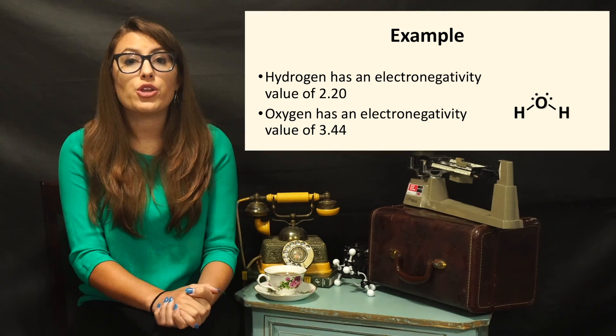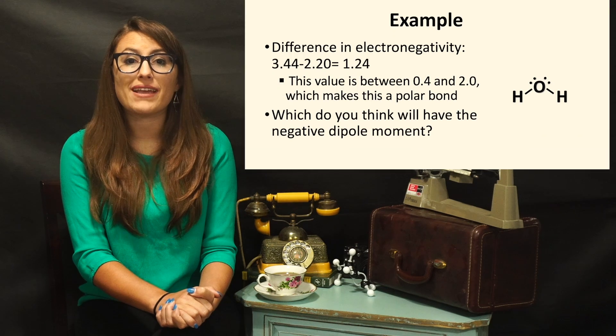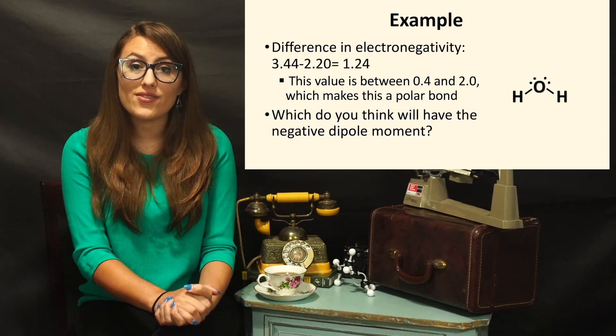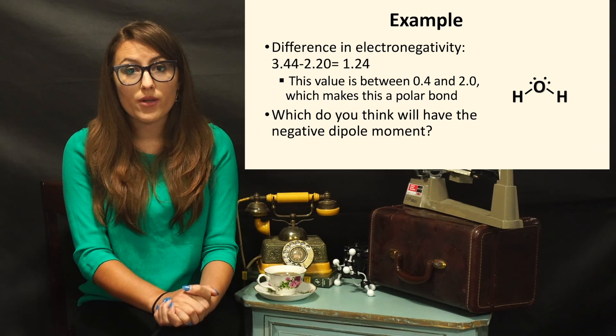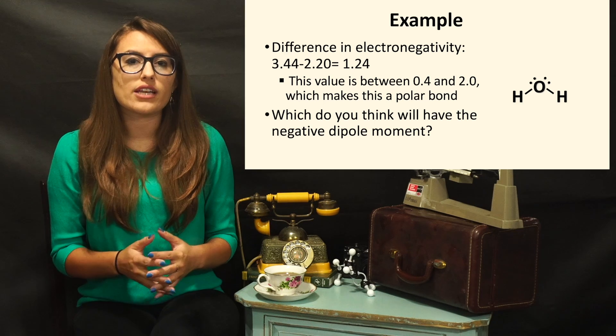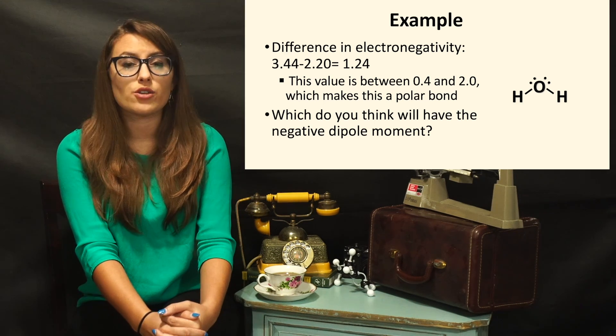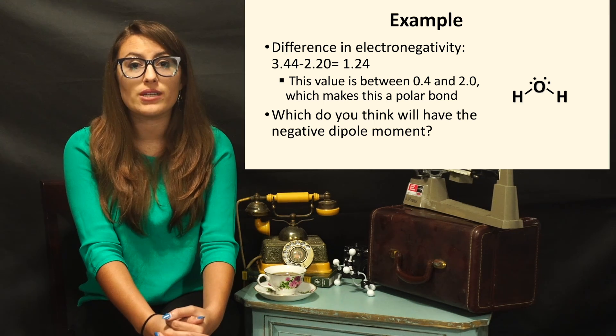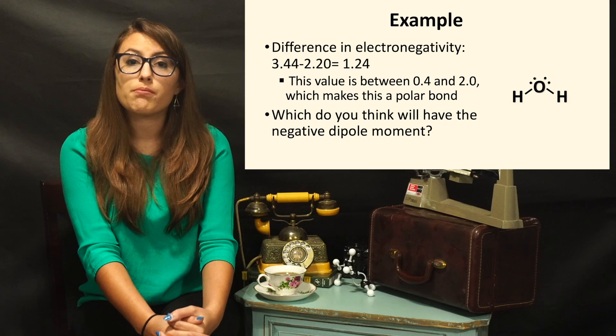Well, hopefully when you approach this question, you started off by calculating the difference in electronegativities, which is 1.24. Due to the difference in electronegativity being greater than 0.4 and less than 2.0, this makes this bond polar.